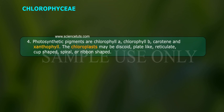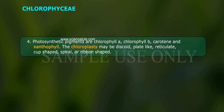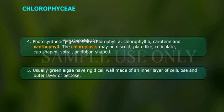4. Photosynthetic pigments are chlorophyll a, chlorophyll b, carotene, and xanthophyll. The chloroplasts may be discoid, plate-like, reticulate, cup-shaped, spiral, or ribbon-shaped. 5. Usually green algae have a rigid cell wall made of an inner layer of cellulose and an outer layer of pectin.